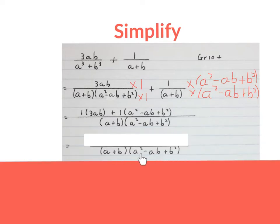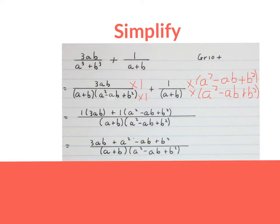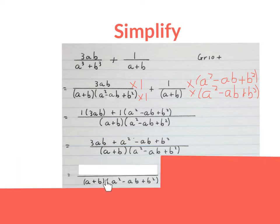We keep our LCD and simplify the numerator at the top. 1 times 3AB will be 3AB. Then I times the plus 1 into the bracket with the distributive law, which gives me this. Now I simplify the top and keep the bottom — keep the LCD. 3AB minus AB gives plus 2AB, the A squared I will keep, and the B squared we will keep.